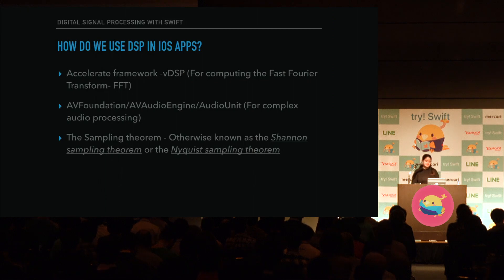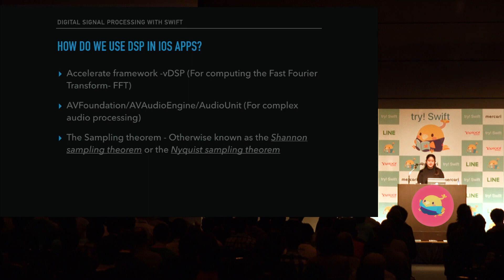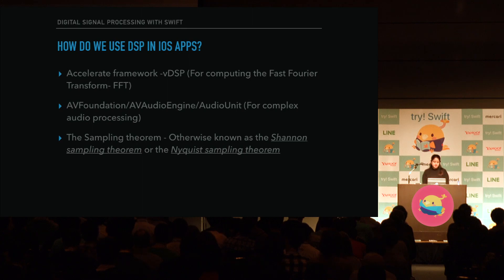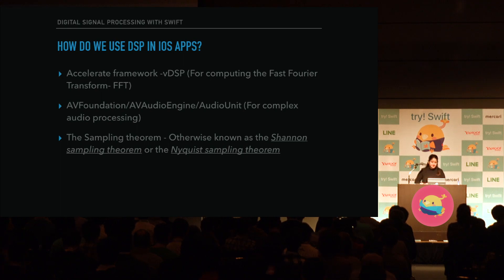So how do we use DSP in iOS apps? The Accelerate framework is a hidden gem within the iOS SDK. It's used to make large-scale mathematical computations optimized for high performance. It's composed of a variety of C APIs for matrix math, digital signal processing, and image manipulation. It's also where we can find VDSP, a library with C and Swift APIs for performing a number of functions related to digital signal processing, including Fourier transforms. The VDSP APIs provide Fourier transforms for transforming one-dimensional and two-dimensional data between the time and frequency domain. It's sometimes preferable to visualize data in the frequency domain, so that's what I'll show you today.